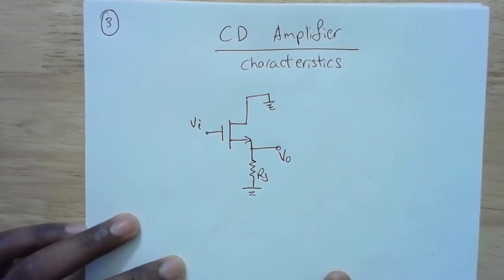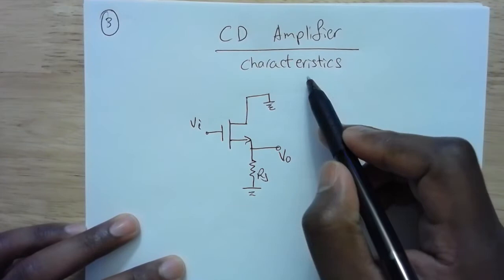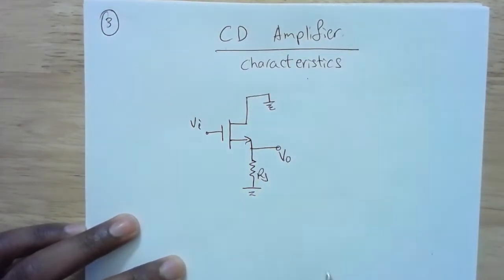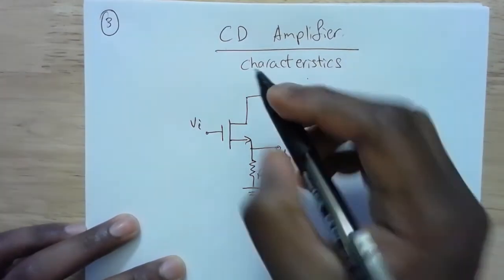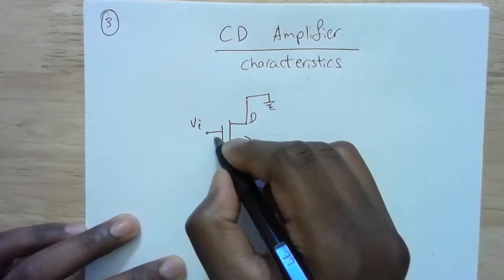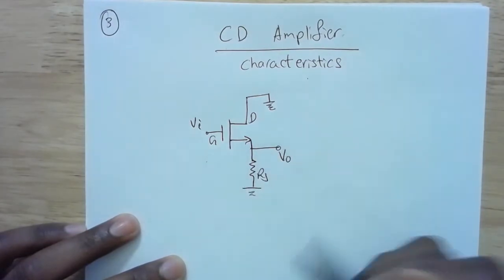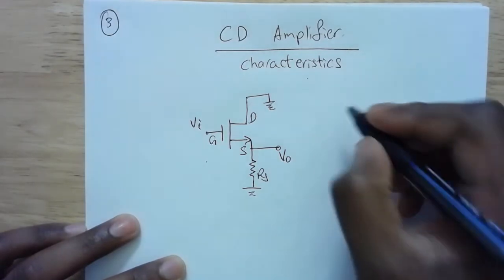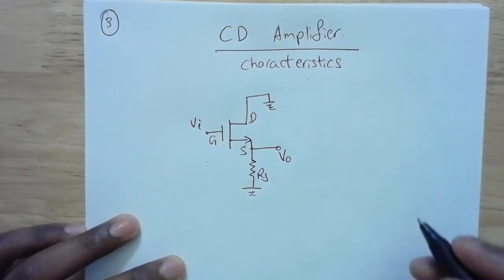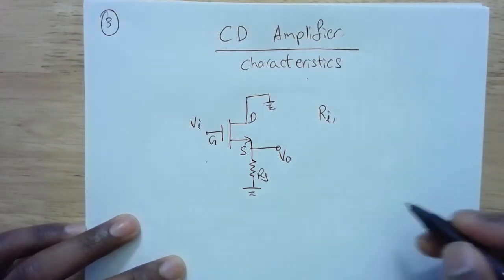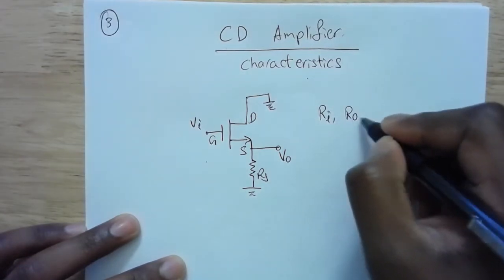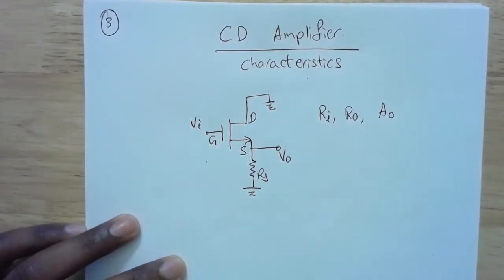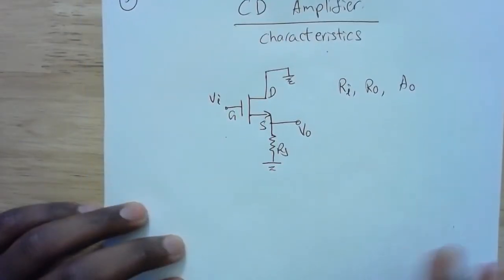In this video we're going to talk about characteristics of the common drain amplifier, or CD amplifier. Common drain means the drain is grounded, the input is applied between the gate and the drain, and the output is measured between the source and the drain. As usual, we're going to calculate three different parameters: ri, the input impedance; ro, the output impedance; and AO, the open circuit voltage gain.